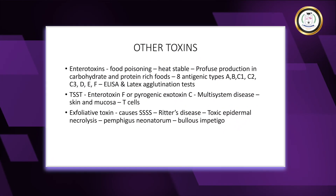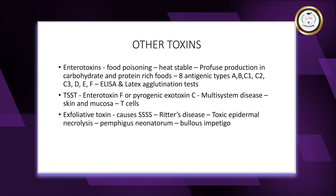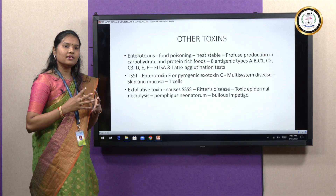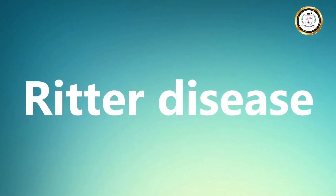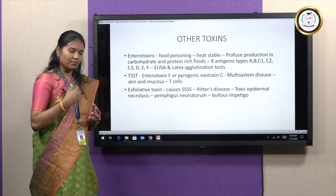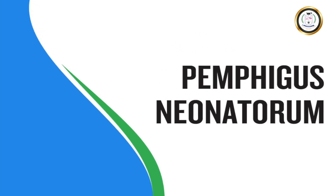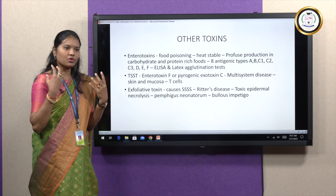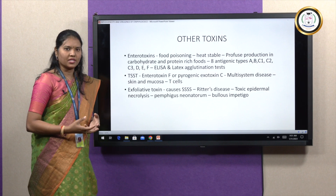The last toxin is the exfoliative toxin or exfoliatin, which causes staphylococcal scalded skin syndrome (SSSS). The severe form is called Ritter's disease in infants and toxic epidermal necrolysis in adults. The milder form is called pemphigus neonatorum and bullous impetigo. Both conditions cause red sores on the face and all over the body, as well as blisters filled with pus.